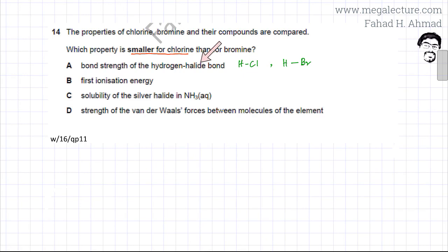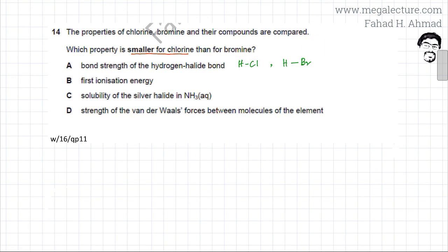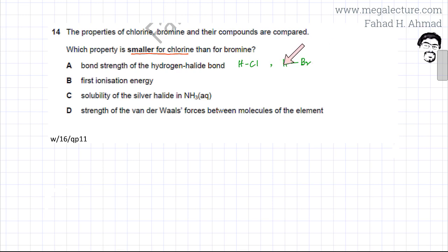The hydrogen halide bond refers to bonds like in HCl or HBr. These group seven elements are called halogens, so a hydrogen halide is HCl or H bonded to bromine. Now, which bond is going to be stronger? Chlorine is a smaller atom — it sits above bromine in its group. Bigger atoms form weaker bonds because the nucleus is further away from the shared pair of electrons, so the attraction is weaker.